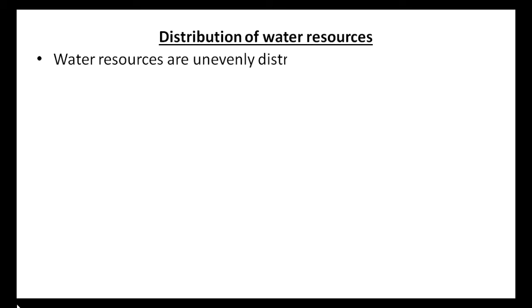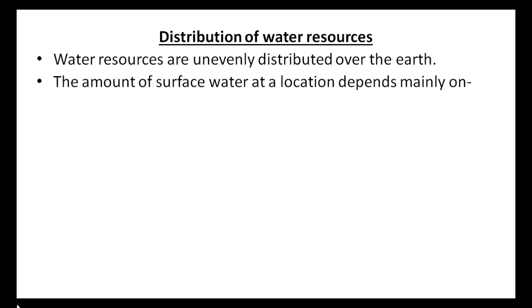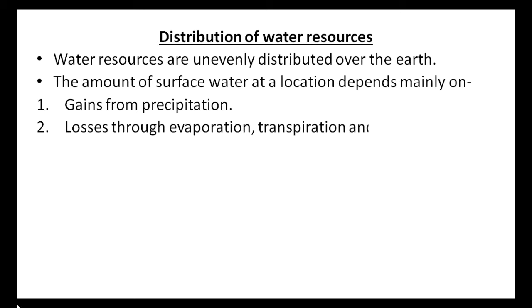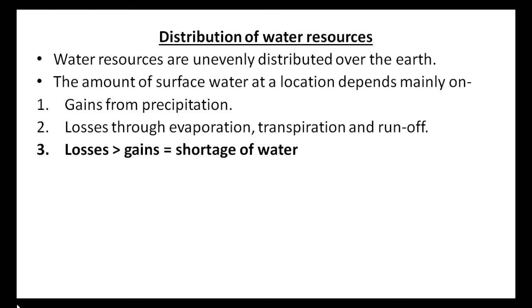Water resources are unevenly distributed over the earth. The amount of surface water at a location depends mainly on gains from precipitation and losses through evaporation, transpiration, and runoff. Where losses exceed gains there is a shortage of water, and where gains exceed losses there is a surplus of water.